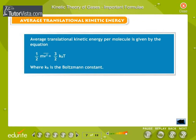Average Translational Kinetic Energy: Average translational kinetic energy per molecule is given by the equation, where KB is the Boltzmann constant.